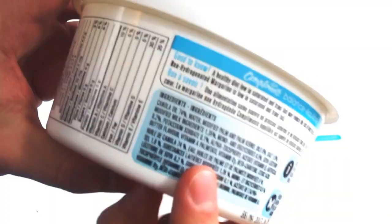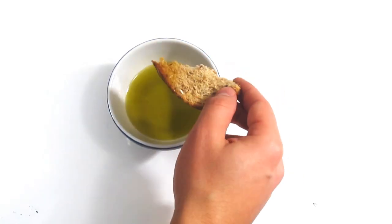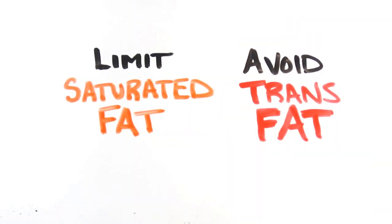The bottom line is to be aware of what you're eating. Margarine can vary so drastically that looking at the label to understand what is or isn't in it will help you make informed decisions. And there are healthier alternatives to both, such as vegetable oil spreads or using olive oil to dip your bread instead of buttering up. No matter what you choose, the recommended goal is to limit the intake of saturated fat and avoid trans fats altogether.